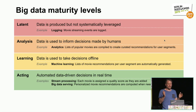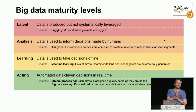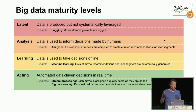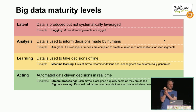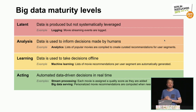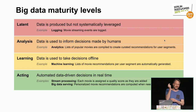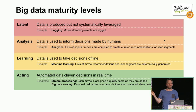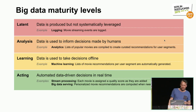At the analysis stage, actual employees are looking at the data, creating reports, and so on. Then you get to the learning stage where you try to automatically learn insights from your data, which is what machine learning does. Then, at last, you get to the acting phase where you try to make decisions in real time based on your data. One subcategory is stream processing or model serving, where it's sufficient to look at a single data item to make a decision. The other is where you need to look at many data items to make a single decision — that's what I mean by big data serving.